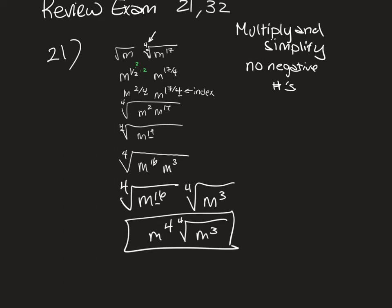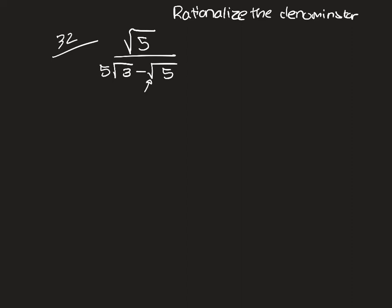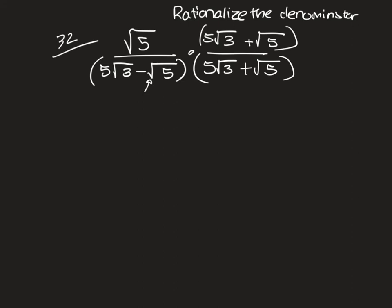The other one was 32. Remember that this one says to rationalize the denominator, which is just a fancy way of saying we don't want any of these radicals in the denominator. So we have to times it by the conjugate. What we do to the bottom we have to do to the top, and I'm going to just put the brackets around it so that it looks like a binomial times a binomial.